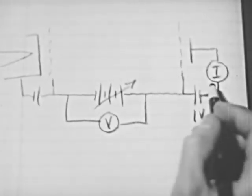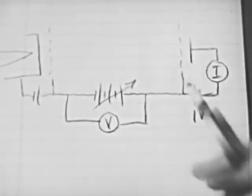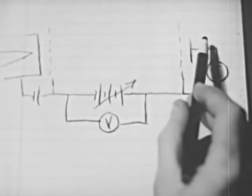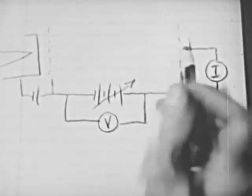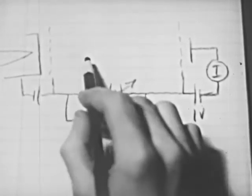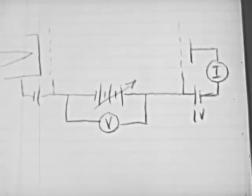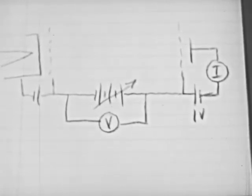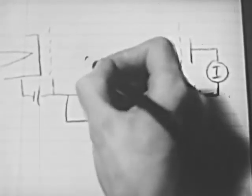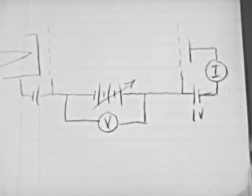Now, if mercury atoms behave according to our proposed model, what do we think will happen as we increase the accelerating voltage? At first, we will expect no current until the electrons have acquired enough energy to get up the potential energy hill. Then, as we increase the accelerating voltage further, we will expect the current will increase just as before. However, this time there are mercury atoms present in the space between the grids, and electrons will be making collisions with these mercury atoms. But as we saw in the dry ice disk experiment, those electrons will not lose any appreciable energy to the mercury atoms as long as the collisions are elastic. Therefore, even though they bounce around quite a bit, when they do go through grid two, they will have just the same energy as if there were no mercury atoms present.